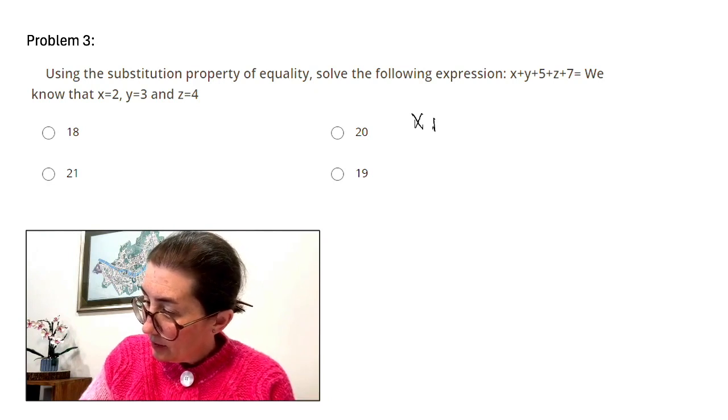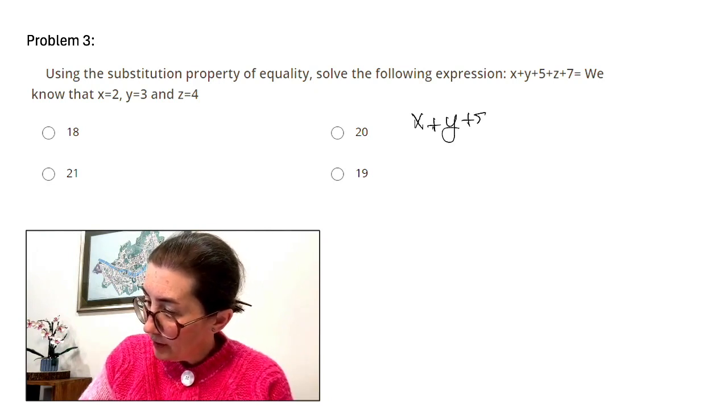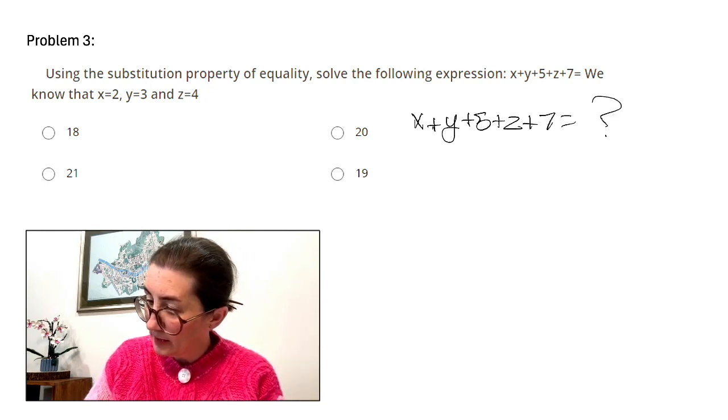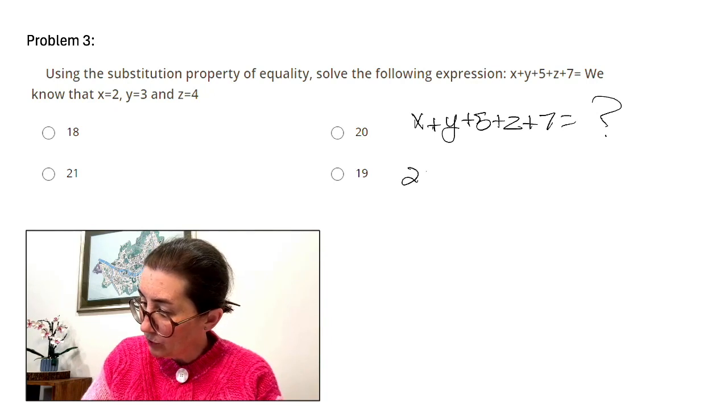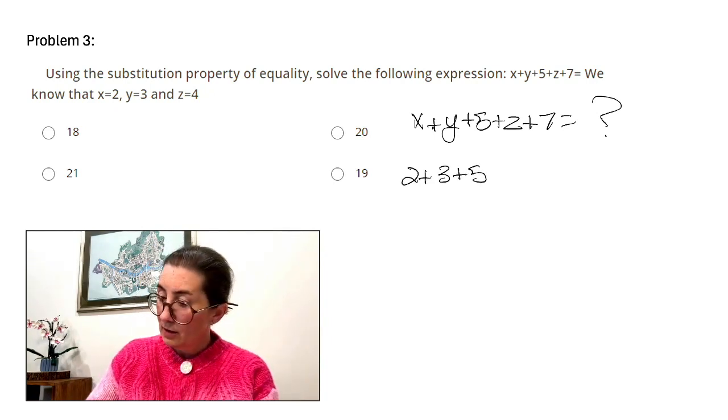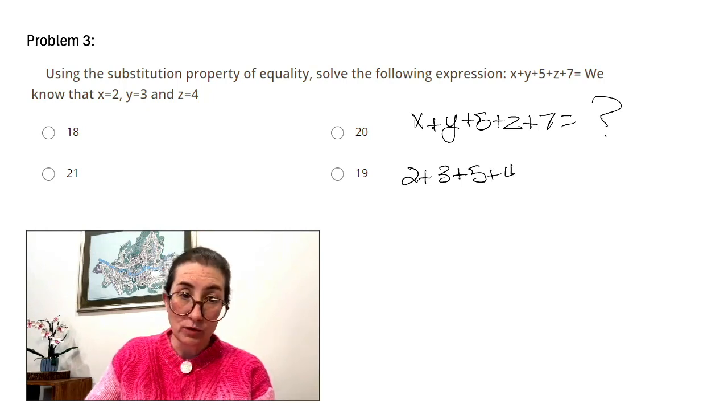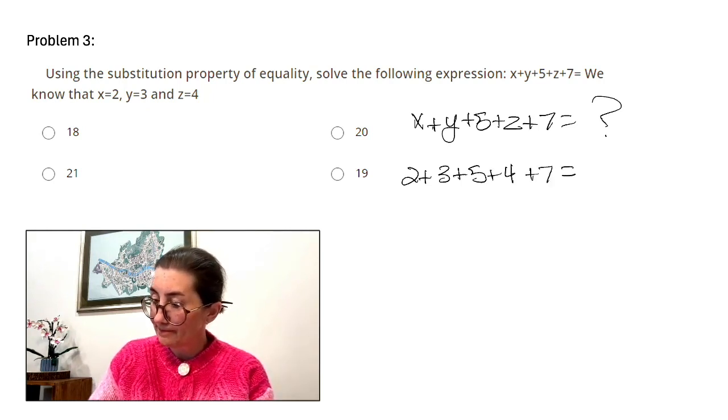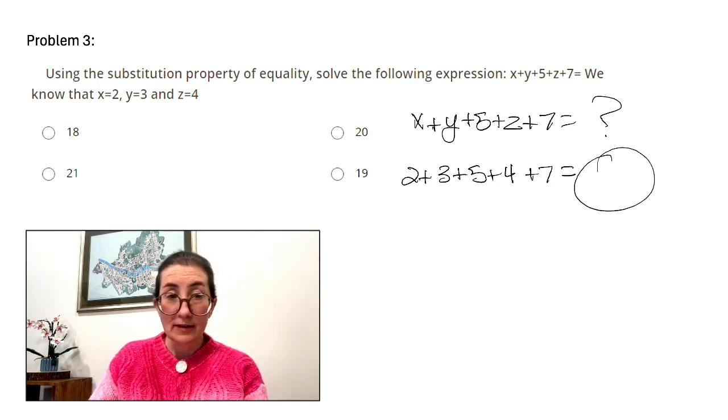x plus y plus 5 plus z plus 7 equals. We don't know yet. x equals 2, y equals 3, plus 5, plus z equals 4, plus 7 equals.